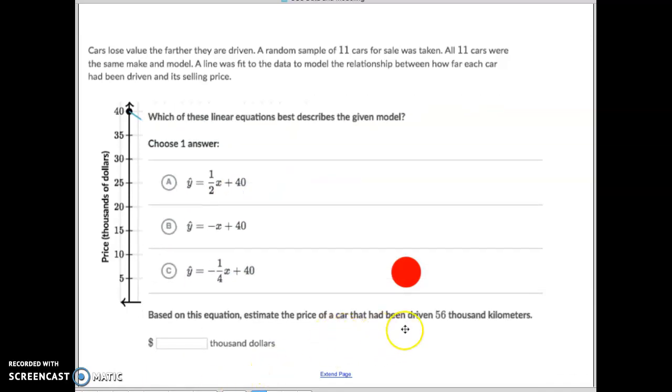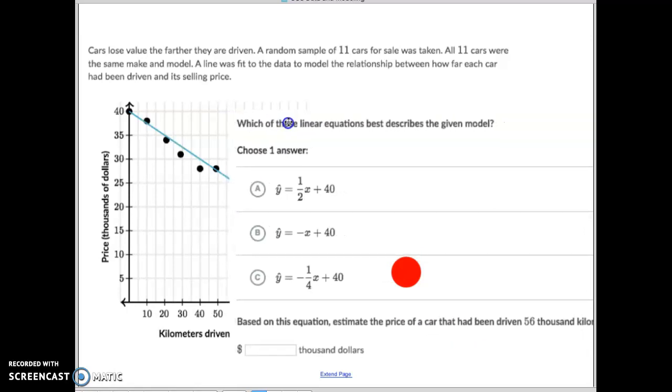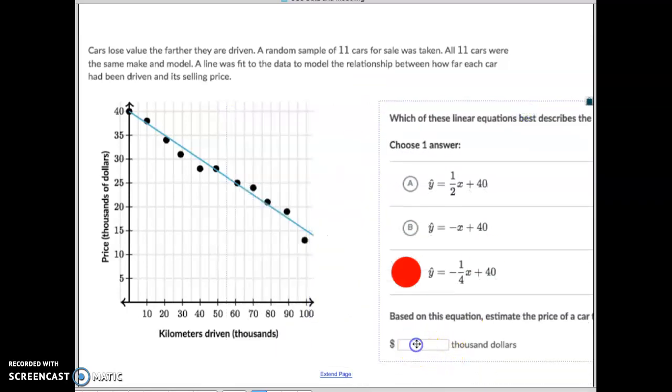Based on this equation, estimate the price of the car after it's been driven 56,000 kilometers. So, first of all, 56,000. Here's 50. There's 60. 55 is in the middle right there. 56. We'll say it's right there. You know your answer. Here's 25. So, it's got to be something just above 25. So, it's kind of a good little indication to help you make sure you get it right. So, if I plug 56 in for x, what is 1 fourth of 56? Or, remember 1 fourth is the same as 0.25. So, what's 56 times 0.25? If you don't know, you could always use a calculator. It actually comes out to be 14. So, 56 times negative 1 fourth would be negative 14. Now, when we add negative 14 to 40, we get 26. So, I'm going to just move this back to where it was. And our answer for this one is 26.